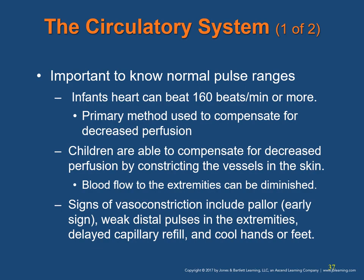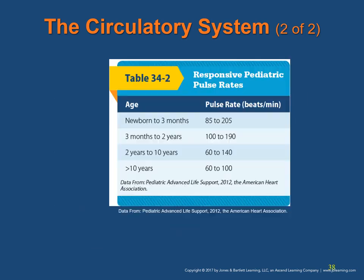The Circulatory System. It is important to know normal pulse ranges when evaluating children. An infant's heart can beat 160 times or more per minute — this is the primary method the body uses to compensate for decreased perfusion. Children compensate for decreased perfusion by constricting vessels in the skin, diminishing blood flow to extremities. Signs of vasoconstriction include pallor as an early sign, weak distal pulses, and delayed capillary refill with cold hands or feet.